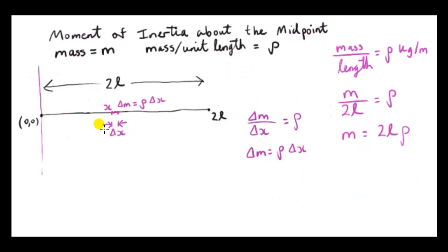Now let's consider a different problem: the moment of inertia of the same rod of length 2L and linear density ρ, but this time about an axis perpendicular to the rod passing through one end. We will solve this both by integration and by using the parallel axis theorem. We identify a small mass element δm = ρ δx, where x is the position of the left edge of the element and δx is its length.